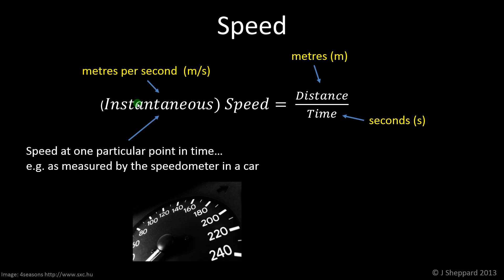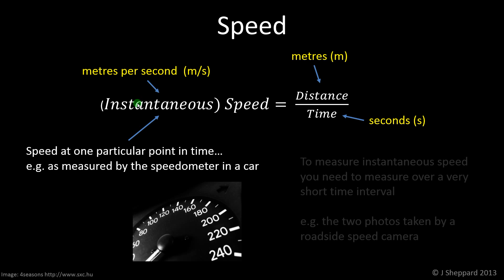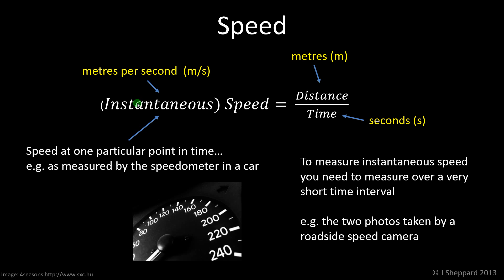The word instantaneous just means that we're talking about speed at one particular point in time. So that might be measured by the speedometer on a car, which of course changes depending on how fast you're going. And in practice, if you're trying to measure an instantaneous speed, you need to measure over a very short time interval. So a yellow speed camera, one of the roadside speed cameras that takes two photographs, that's a fairly good approximation of a measurement of instantaneous speed, because the two flashes, the two photographs are very close together. So it's a short time interval. The speed can't change much during that time.